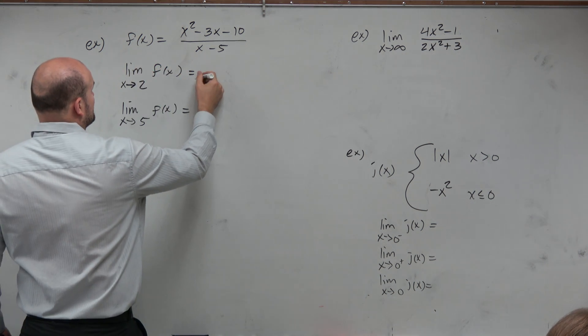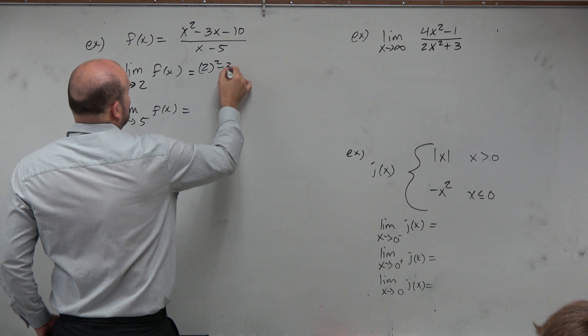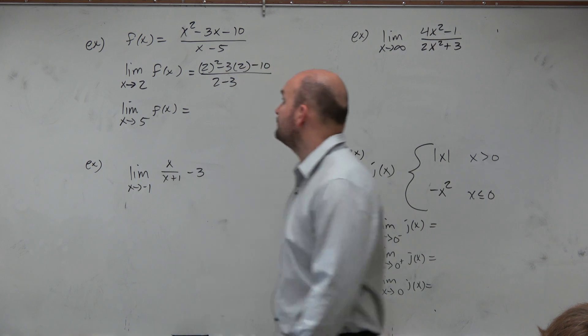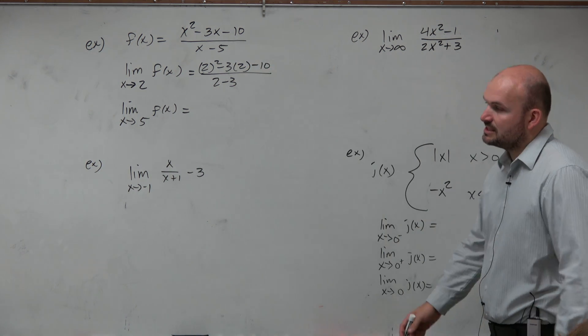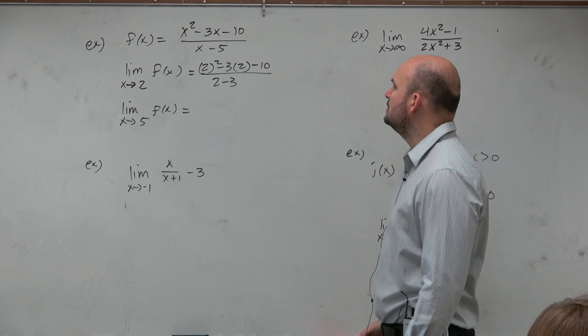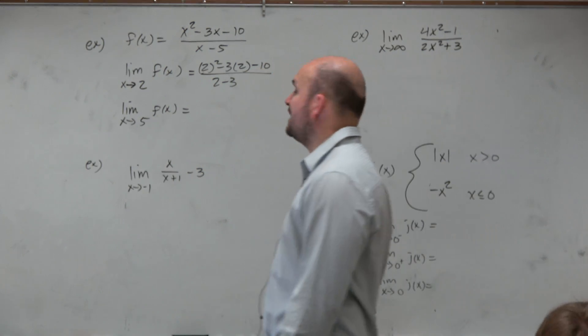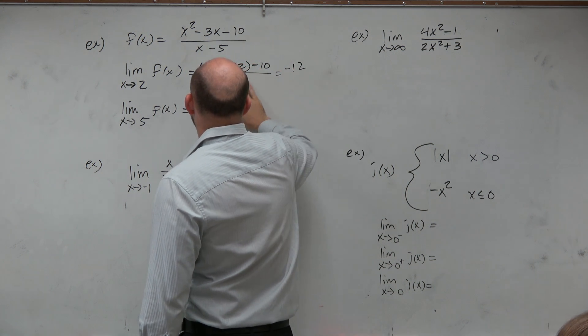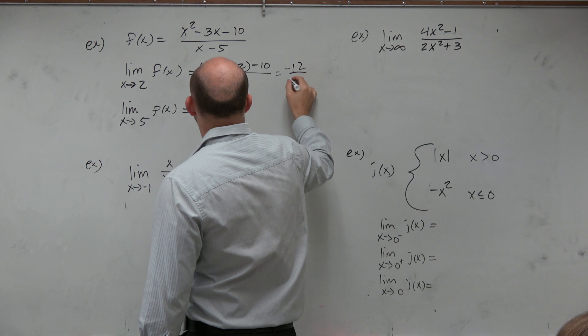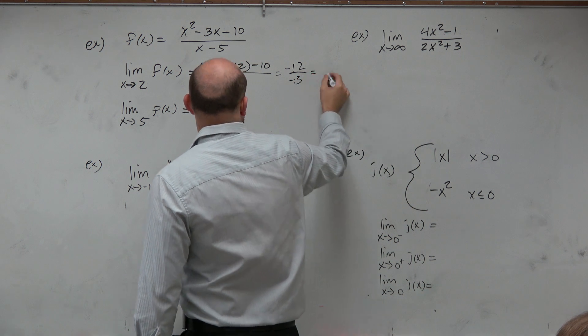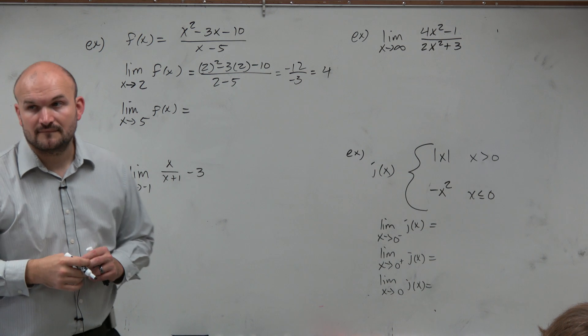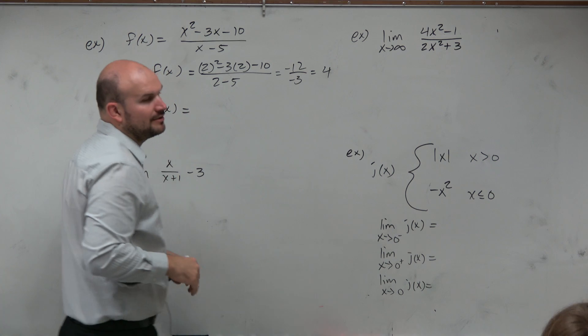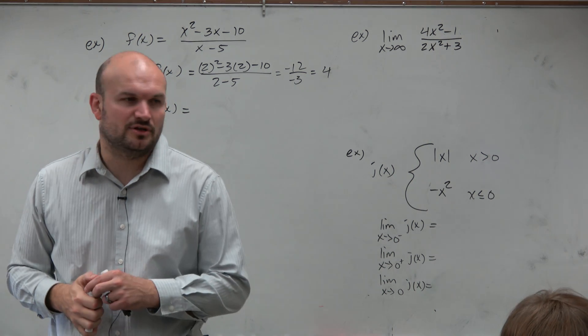If you plug in direct substitution here, you would have 2 squared minus 3 times 2 minus 10, all over 2 minus 5. So 2 squared is 4 minus 6 is negative 2, minus 10 is negative 12. 2 minus 5 is negative 3, which equals positive 4. Follow my math? That would be your limit. Your graph looks something, I don't know what the graph looks like, but we'll look at that in a second.